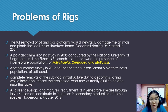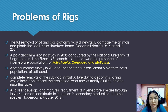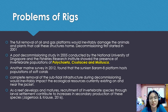Full removal of oil and gas platforms would cause huge damage to the animals and plants that inhabit that area. So one of the alternative ways is decommissioning. Decommissioning first started in 2001. A post-decommissioning study in 2005 conducted by the National University of Singapore and the Fishery Research Institute showed the presence of invertebrate populations such as polychaeta, crustacea, and mollusca.